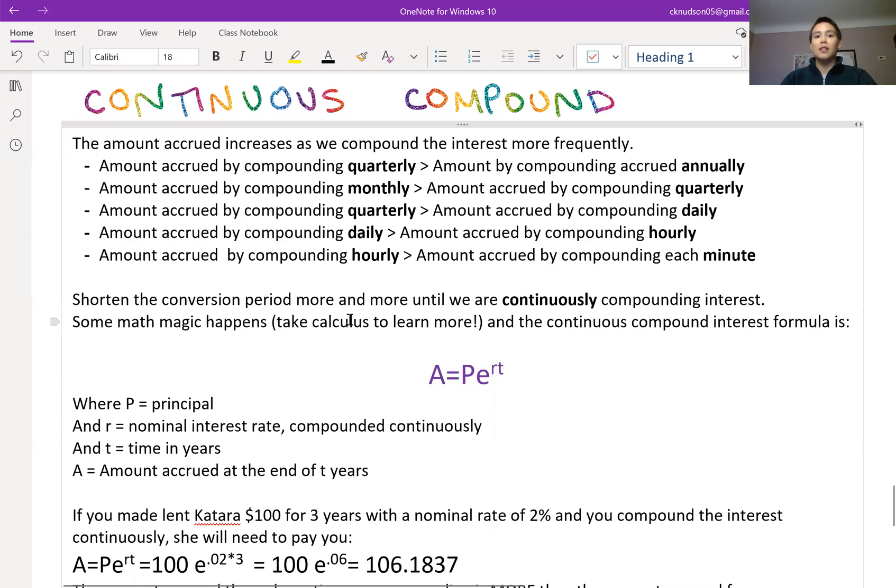So if we take this and compound it more and more and more frequently so that finally we're continuously compounding interest, then some math magic happens and you can take calculus if you'd like to learn more and we can actually calculate the continuous compound interest formula as follows.